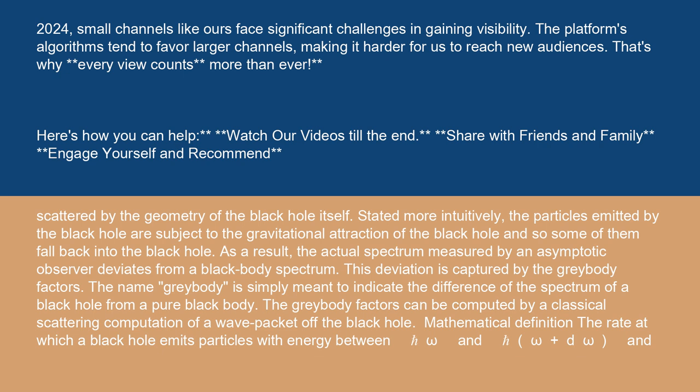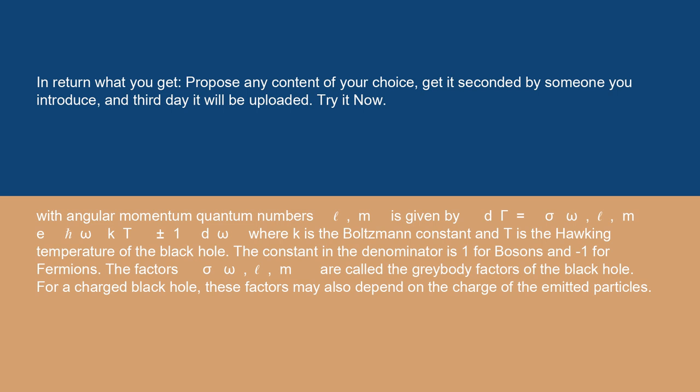Mathematical definition: the rate at which a black hole emits particles with energy between ω and ω + dω and with angular momentum quantum numbers ℓ, m is given by dΓ = σ_ω,ℓ,m × (e^(ω/kT) ± 1)^(-1) dω, where k is the Boltzmann constant and T is the Hawking temperature of the black hole. The constant in the denominator is 1 for bosons and -1 for fermions. The factors σ_ω,ℓ,m are called the gray body factors of the black hole.